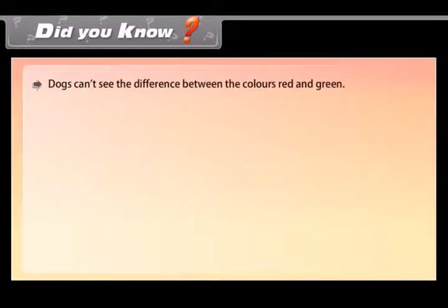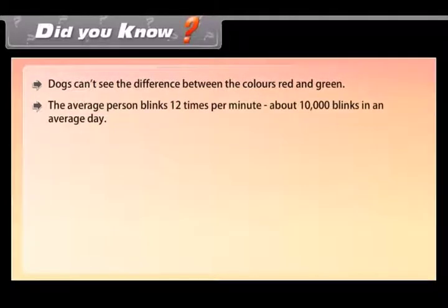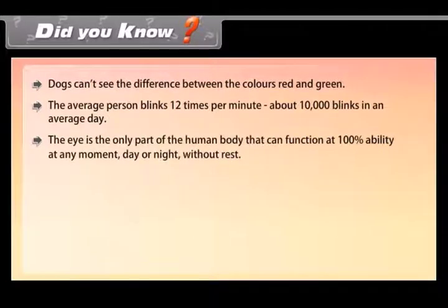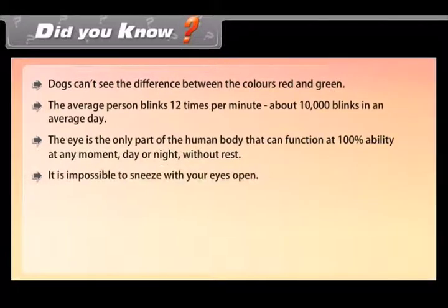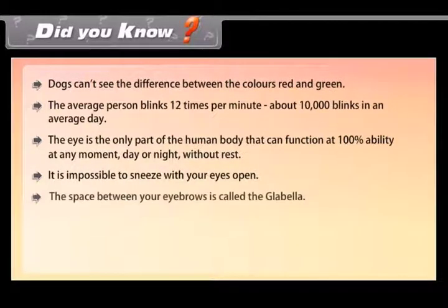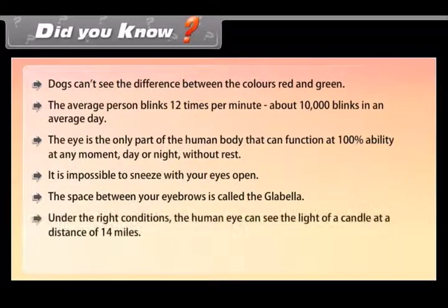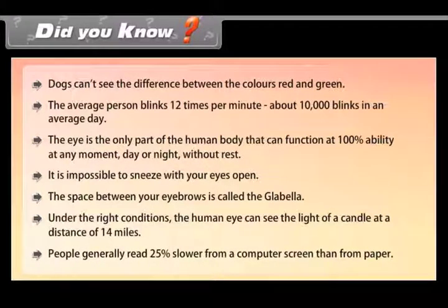Did you know: Dogs can't see the difference between red and green. The average person blinks 12 times per minute, about 10,000 blinks in an average day. The eye is the only part of the human body that can function at 100% ability at any moment, day or night, without rest. It is impossible to sneeze with your eyes open. The space between your eyebrows is called the glabella. Under the right conditions, the human eye can see the light of a candle at a distance of 14 miles. People generally read 25% slower from a computer screen than from paper.